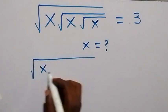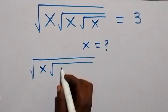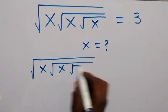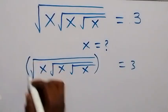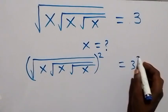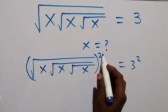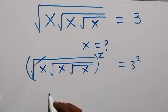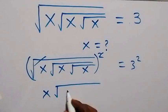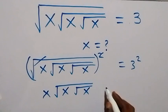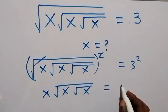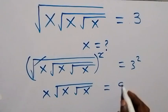So we have root x times root x times root x equals 3. Now we square both sides. The square cancels the first square root, and we are left with x times root x times root x equals 9 (which is 3 squared).